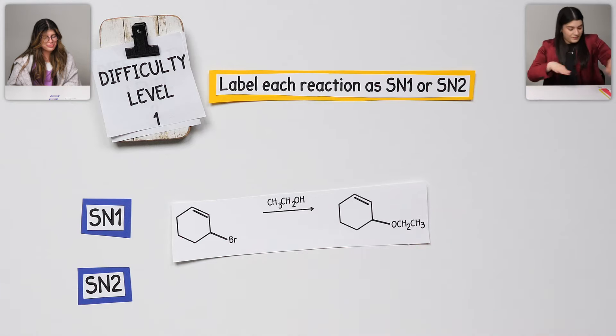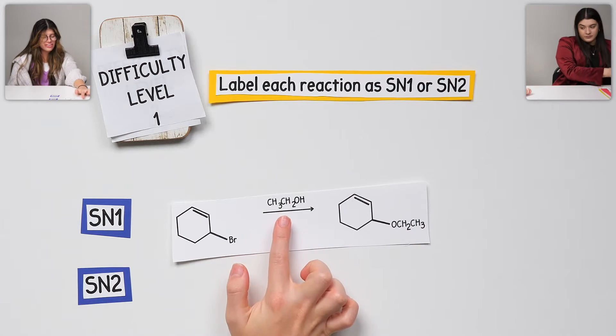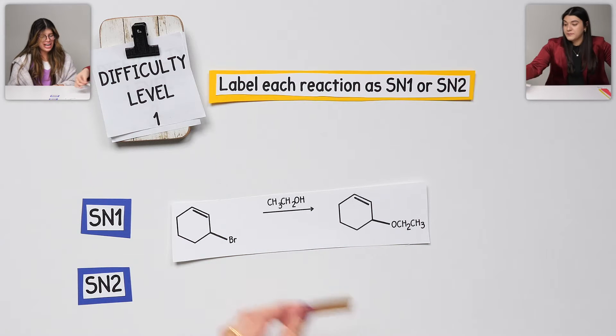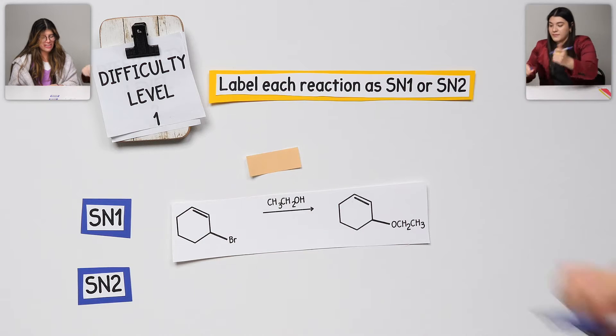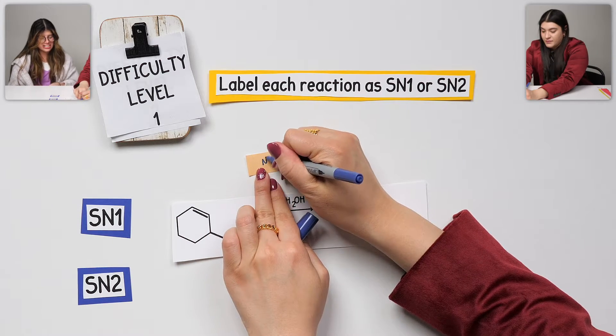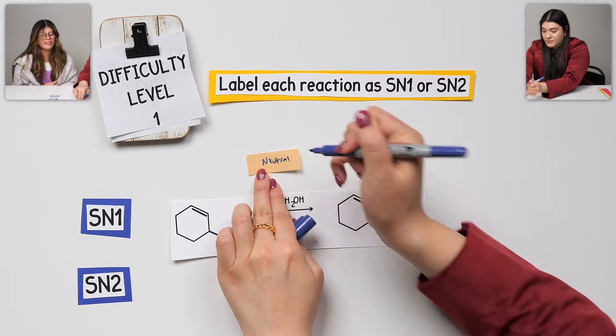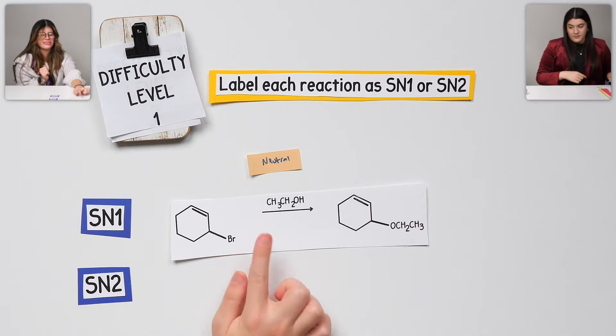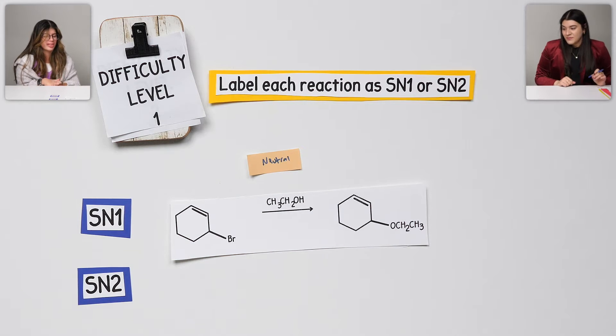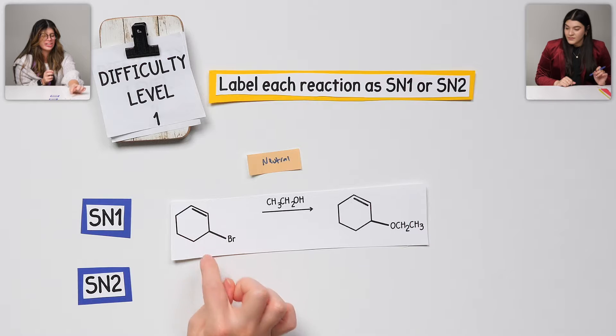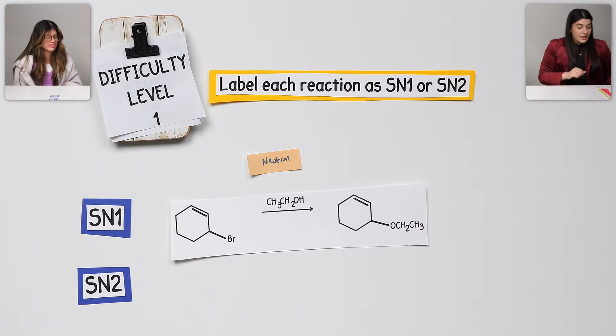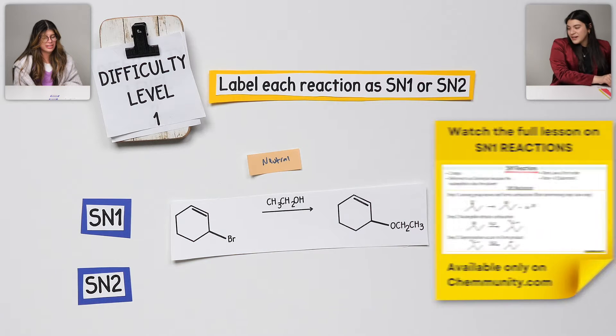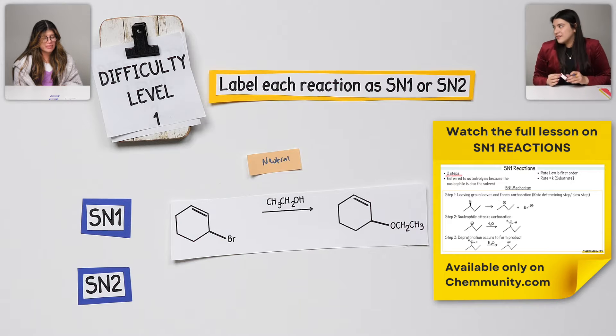What about this one? I have an alcohol, which is neutral. And then on this guy right here, it is secondary. Really, I guess the indicator would be the nucleophile because it's neutral. It would have to be SN1.